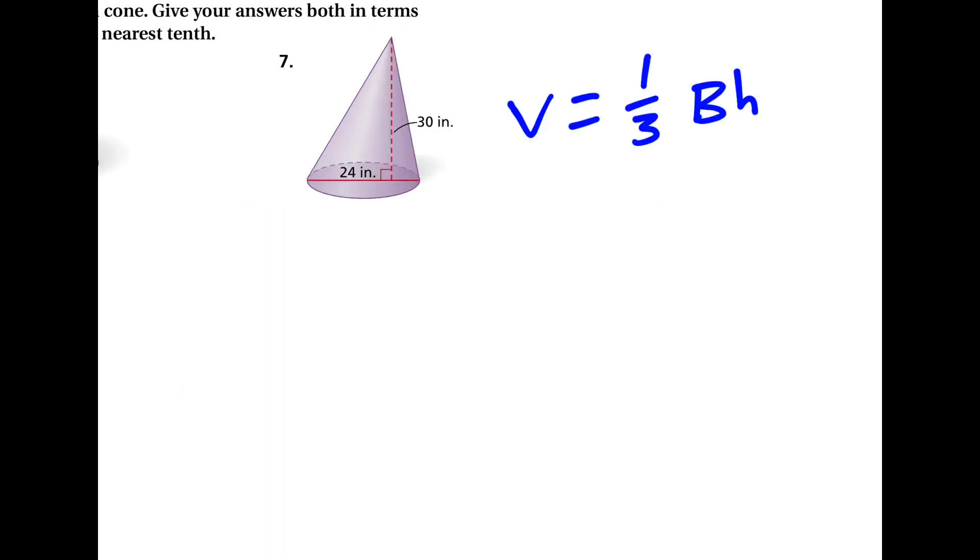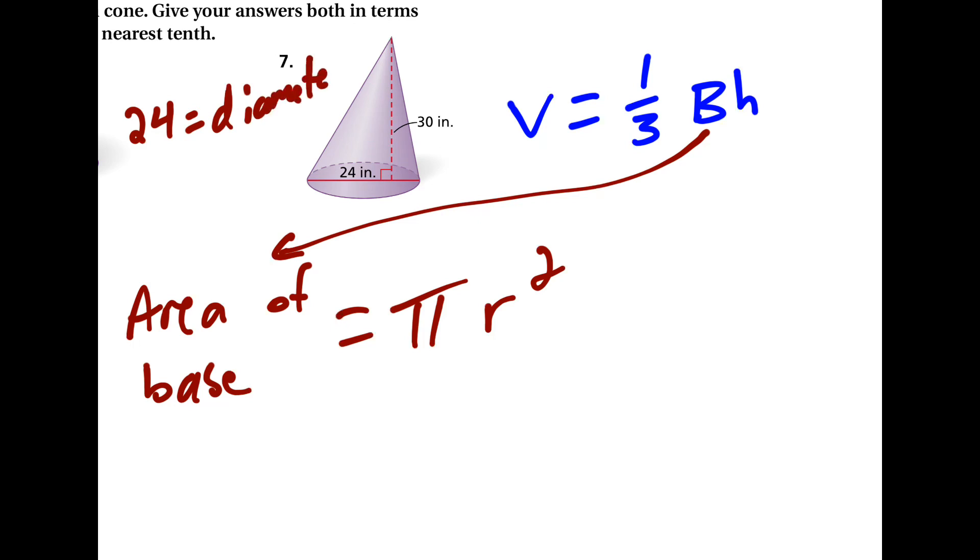We use the same formula for number 7. And this time when we find the area of the base, we aren't directly given the radius. 24 is equal to the diameter here. But we know the relationship between diameter and radius. The radius is exactly half of the diameter, so that's what we can plug in here. This becomes pi times 12 squared, or 144 pi for the area of the base.